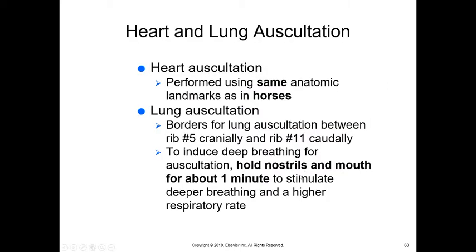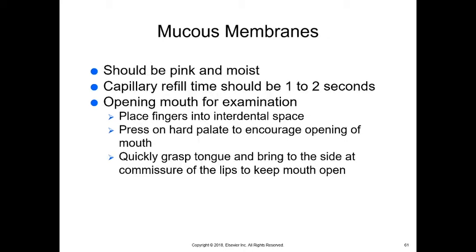For the heart in ruminants, we use the same landmarks as horses — behind the elbow and just up a little bit. For lung auscultation, listen from rib five back to rib 11; ruminants have 18 ribs, so it goes back further. If we need to induce deep breathing, we can hold their nostrils and mouth shut for about a minute, causing them to take a really big breath.